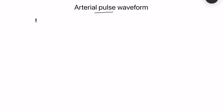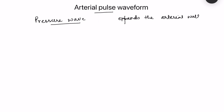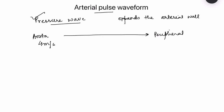Arterial pulse is a pressure wave that travels along the arteries when the left ventricle contracts, which expands the arterial wall, and this expansion is felt as pulse. It is not due to blood flow — it is actually a pressure wave whose velocity is much greater than blood flow velocity. In central arteries like the aorta it is approximately 4 meters per second, and in peripheral arteries it is 16 meters per second.